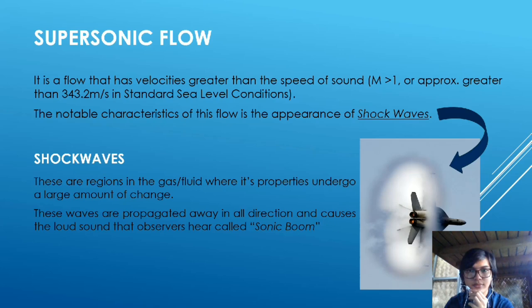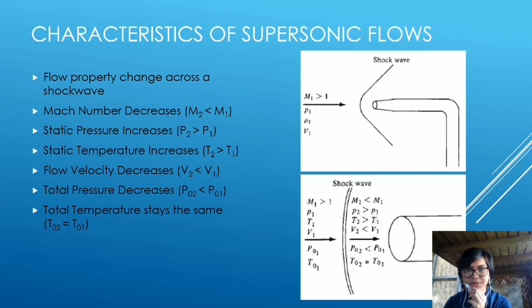Characteristics of supersonic flows: flow property changes across a shock wave. In the diagram here, you can see two diagrams representing air flowing through a pitot tube. As you can see, as the air passes through the shock wave, it changes its properties like the Mach number. The pressure decreases, the static pressure increases, the static temperature increases, flow velocity decreases, total pressure decreases, and total temperature stays the same.